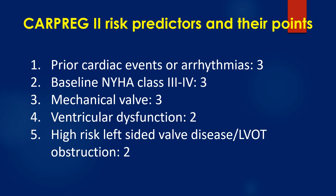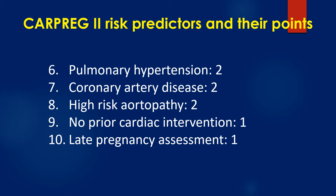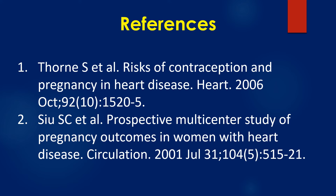CARPREG 2 risk predictors and their points are: 1) prior cardiac events or arrhythmias; 2) baseline NYHA class 3 or 4 – 3 points; 3) mechanical heart valve – 3 points; 4) ventricular dysfunction – 2 points; 5) high-risk left-sided valve disease or LVOT obstruction – 2 points; 6) pulmonary hypertension – 2 points; 7) coronary artery disease – 2 points; 8) high-risk aortopathy – 2 points; 9) no prior cardiac intervention – 1 point; 10) late pregnancy assessment – 1 point.